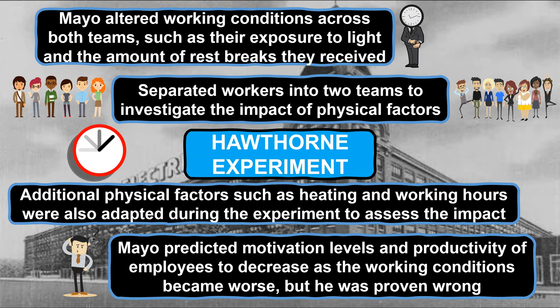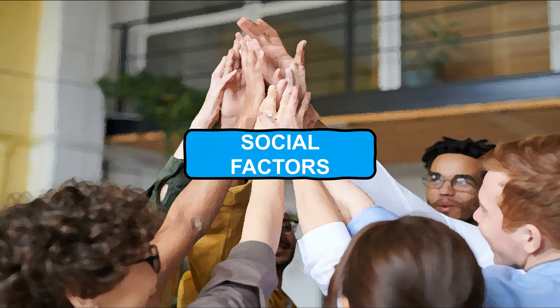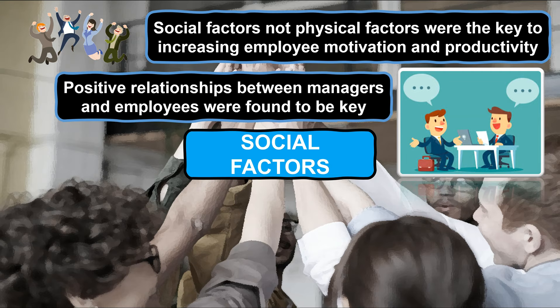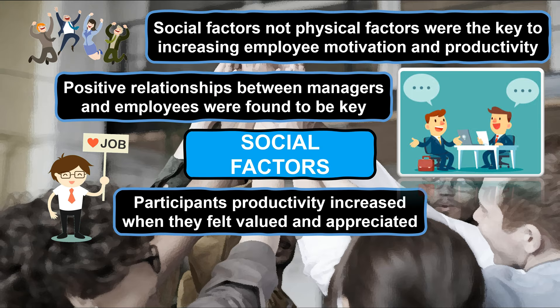So Mayo had to go back to the drawing board and started to investigate the matter further, and eventually he came to a different conclusion than what he originally believed. He concluded that it was in fact social factors and not physical factors which helped to boost both the motivation and productivity levels of employees. What became clear during the experiment was that positive relationships and clear communication between managers and employees were found to be very influential in regards to increasing employee motivation. This was because the participants started to feel valued and appreciated as they had been selected to take part in the experiment, which made them feel somewhat special and led to them forming new relationships and increased their morale.